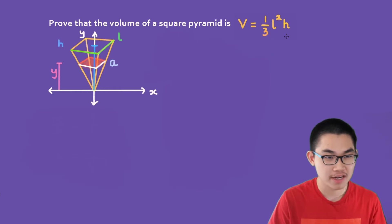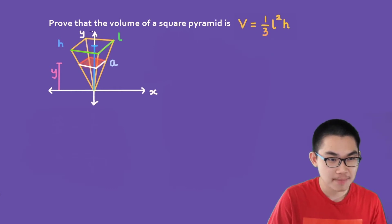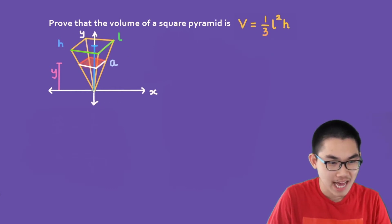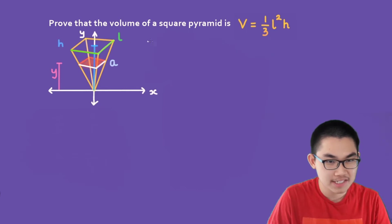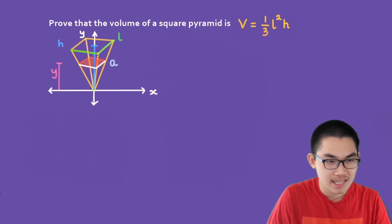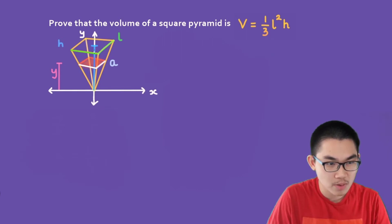Here I've drawn the diagram of a square pyramid. The height is from here to here. And since this is a square pyramid, each side has length L — so this side is L, and this side is also L.